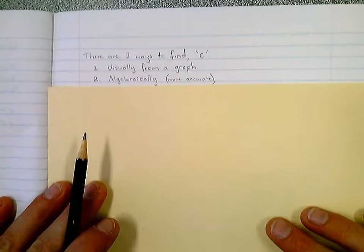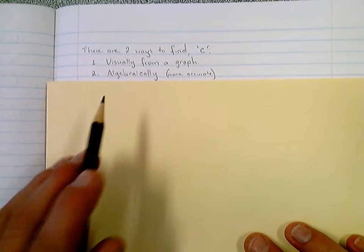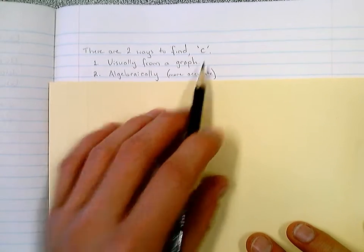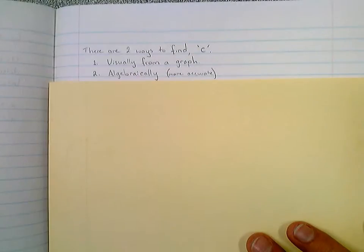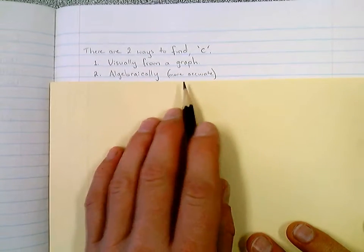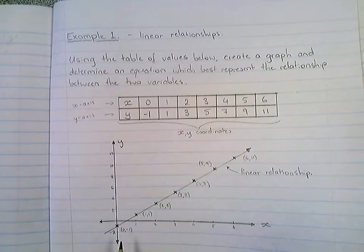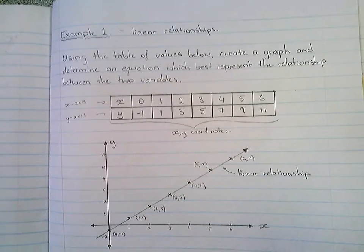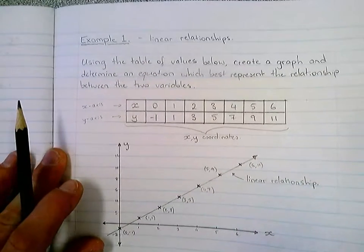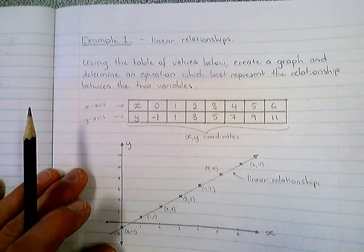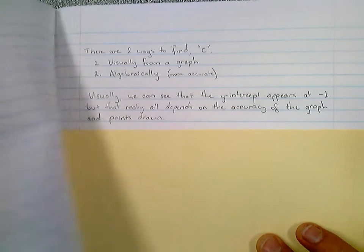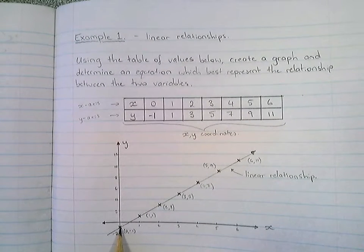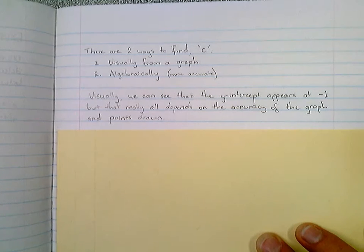So I did that over the page. Now, I've noted here that before I even calculate the y-intercept, I just wanted to make a note that there are two ways to find the c value of the y-intercept. Now you can do it visually from the graph by actually looking at where it cuts the y-axis, which is right here. Or you can algebraically calculate it. Now, I prefer the algebraic method because it's more accurate. The reason being is your visual representation is realistically only as good as the graph in which you drew. Now, if your graph isn't accurate, it might not appear, it might not actually be, or the y-intercept might not be where it actually appears to be. So I like to do it algebraically to be sure. So I've said visually we can see if the y-intercept appears at negative one. So what I mean by that is if I scroll back over the page, you can see it appears at negative one here. But as I said, that really all depends on the accuracy of the graph and the points drawn.